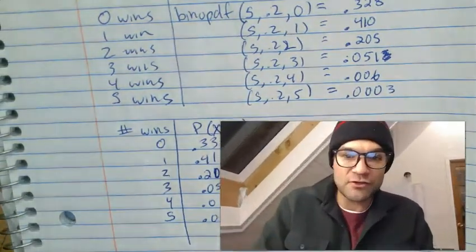Binomial distribution tells you the probability of getting exactly X successes — exactly X wins — out of so many games. Hopefully that made sense. Have a great day, keep doing stats!